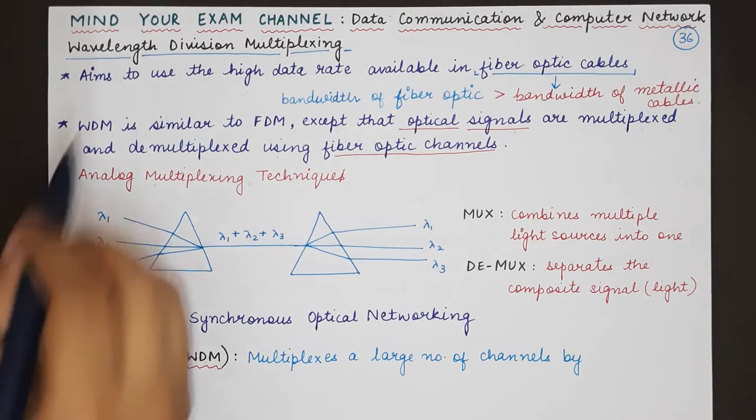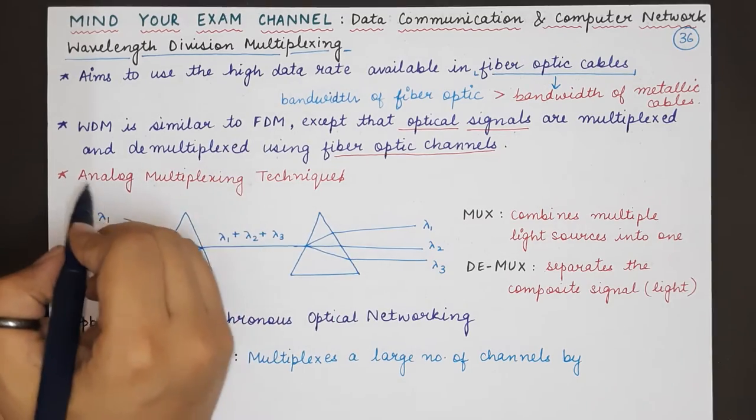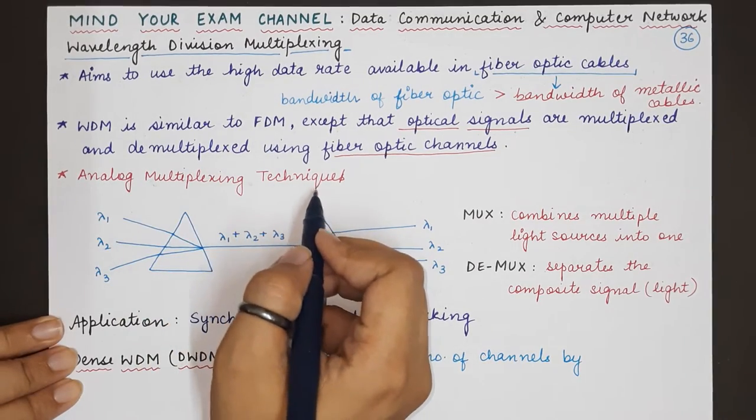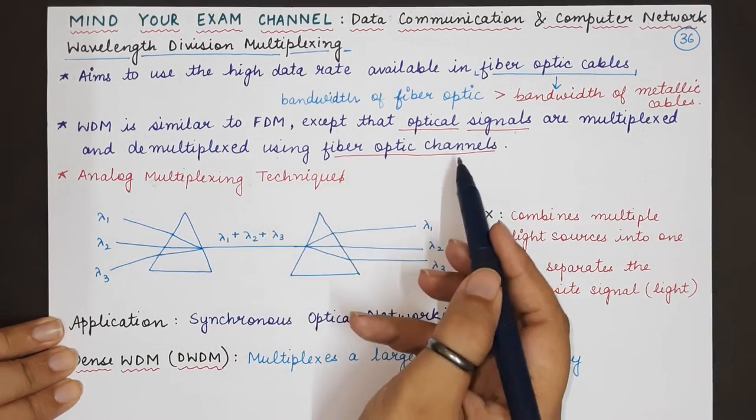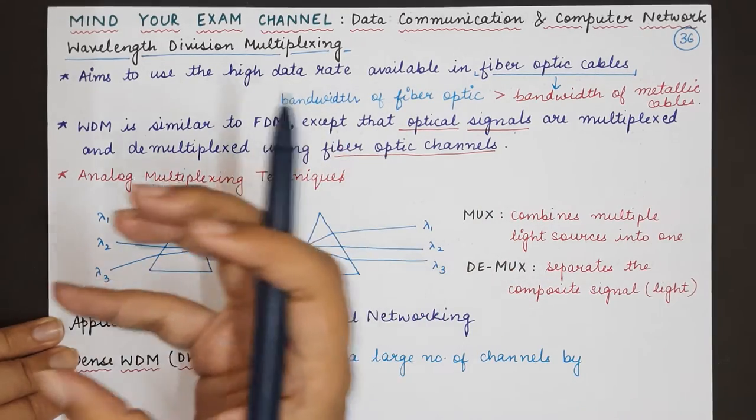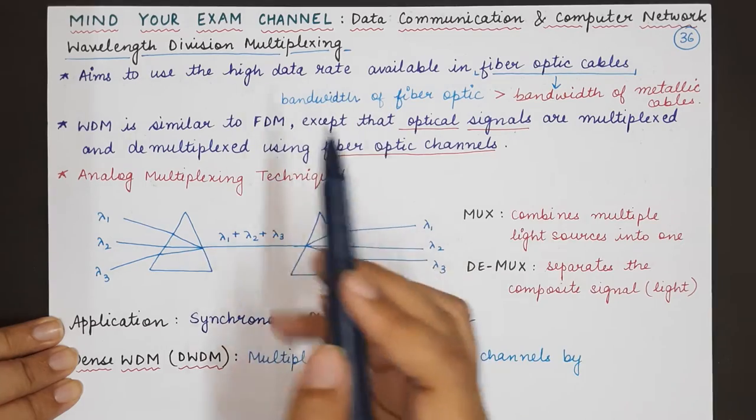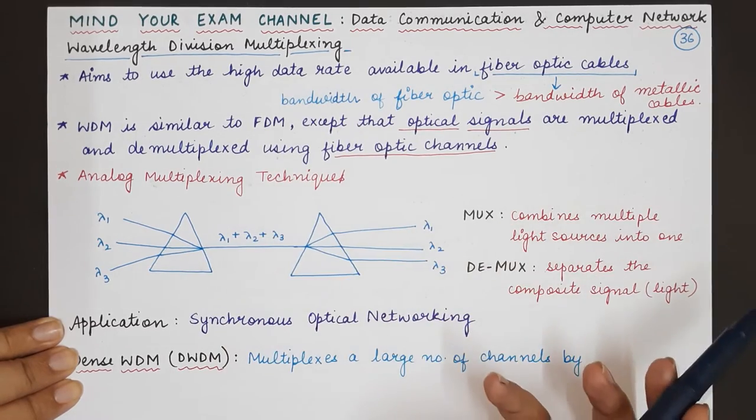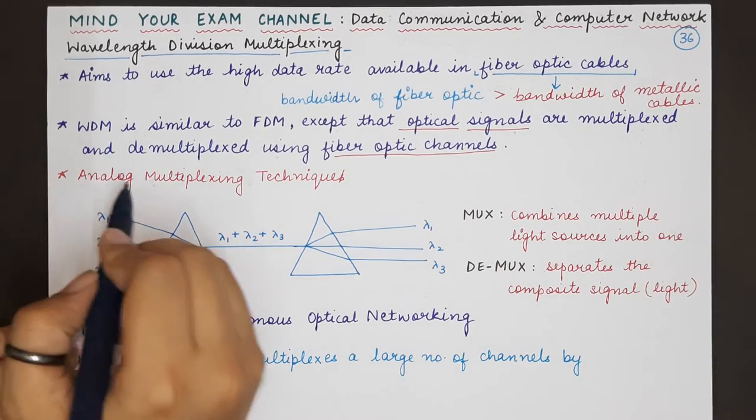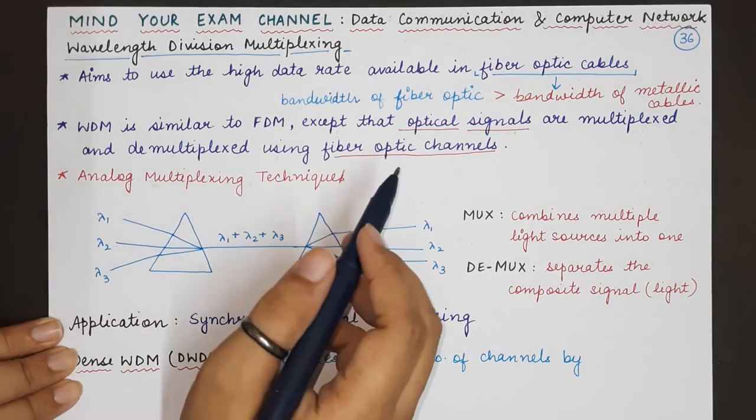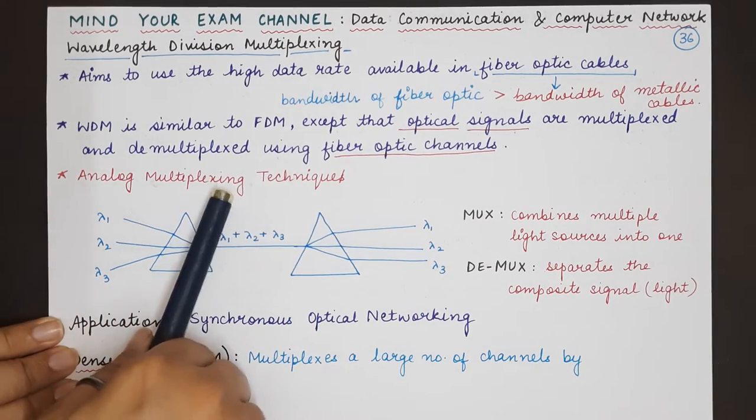Now again wavelength division multiplexing is an analog multiplexing technique because fiber optic channel transmits optical signals which are analog in nature, continuous in nature. So this is also like frequency division multiplexing an analog multiplexing technique.